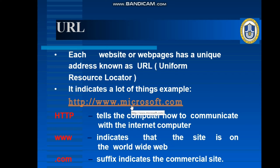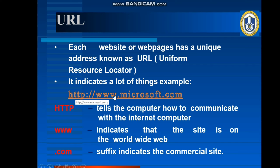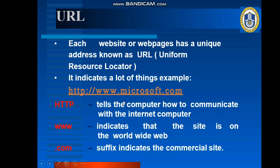Each website has a different address. Like for Google, when we want to search, we type www.google.com. For opening Gmail, we write www.gmail.com. In this way, all these websites or web pages have different addresses, and that is known as URL. A URL contains three terms: HTTP, www, and .com. WWW you already know is World Wide Web, indicating the site is on the World Wide Web. HTTP actually tells the computer how to communicate with the internet, and .com indicates a commercial site. So these together make a URL.